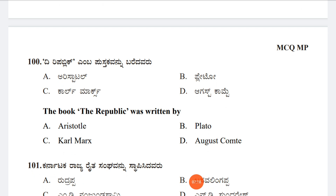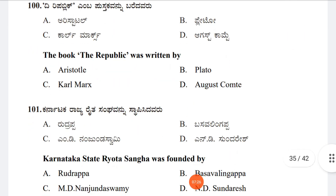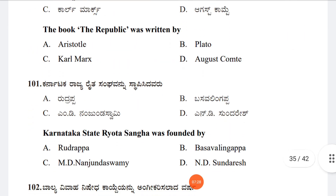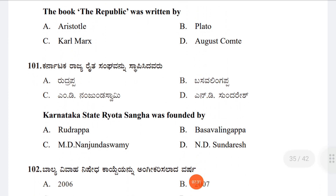Question 100: The book 'The Republic' was written by Option A: Aristotle, Option B: Plato, Option C: Karl Marx, Option D: Auguste Comte. The answer is Option B, Plato.